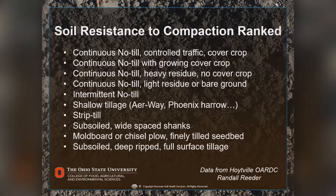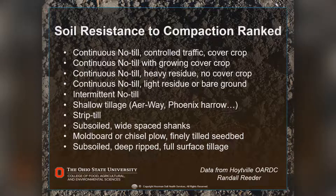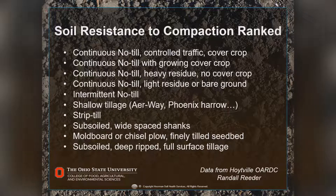Ranking soil resistance to compaction: the worst case is subsoiling with full surface tillage that totally destroys soil structure, followed by moldboard or chisel plowing, then subsoiling with wide-spaced shanks. Strip-till is better than that. Shallow tillage with tools like an airway or Phoenix Harrow causes less damage. Continuous no-till with light residue or bare ground is next, then continuous no-till with heavier residue, then growing cover crops. The ultimate is continuous no-till with controlled traffic and cover crops — that's where we get the biggest benefit.